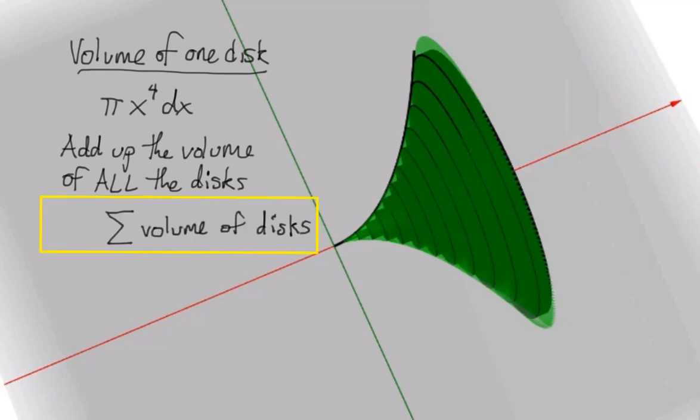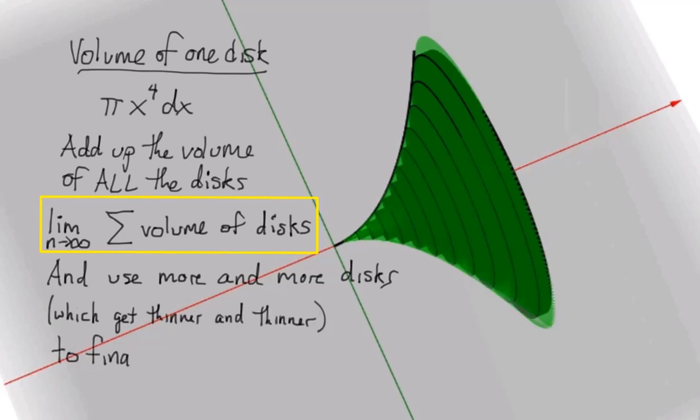Remember, sigma means to add up all of these volumes. And as we fit more and more discs into this solid shape, meaning the number of discs goes to infinity, you see that they must get thinner and thinner. And finally, this gives us the total volume that we're searching for.